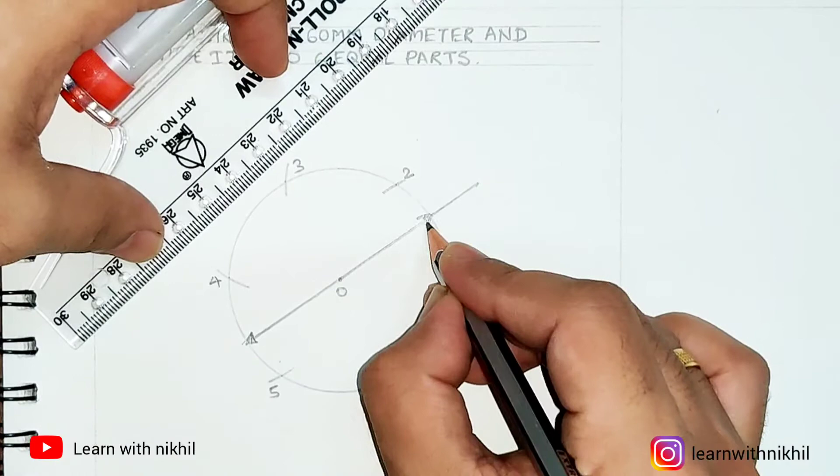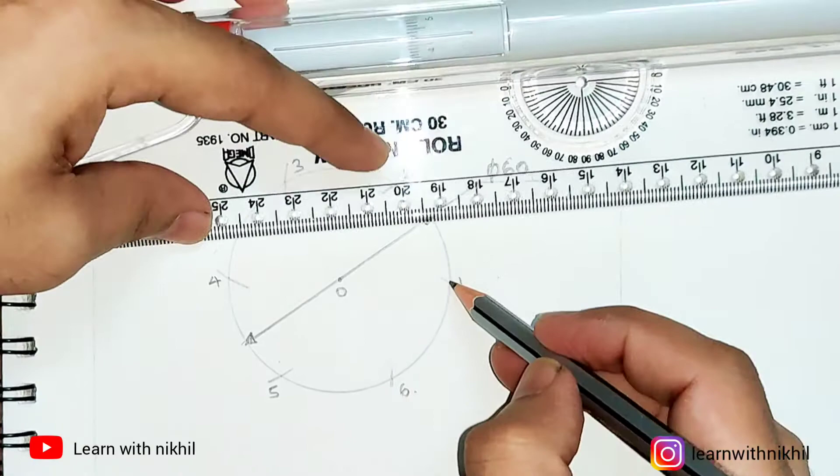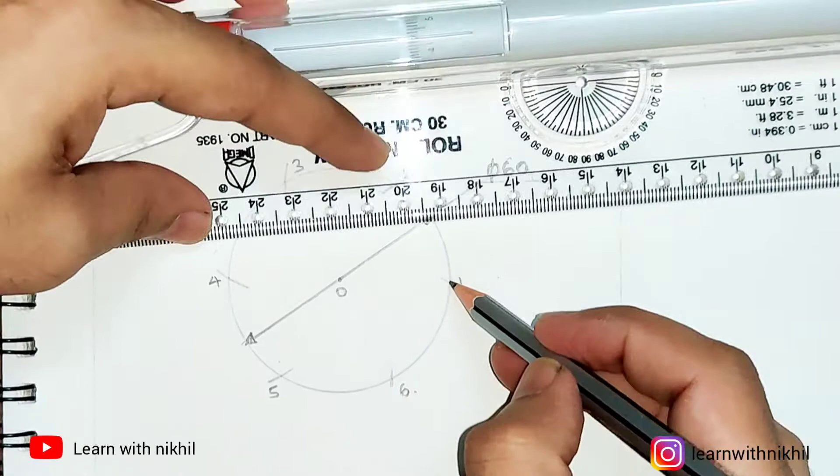This I am just marking the dimension - that is the diameter 60mm. As you can see, taking the radius on the compass, I have been able to divide the circle into six equal parts.